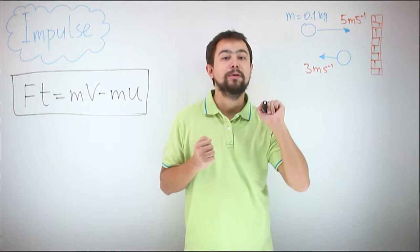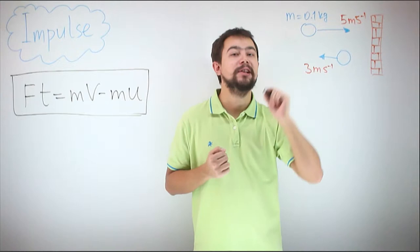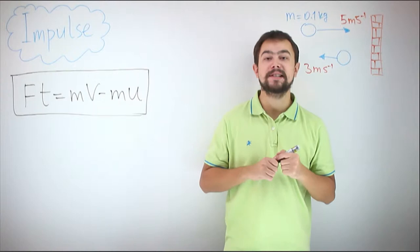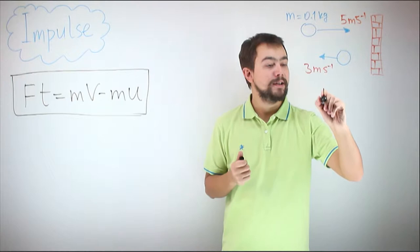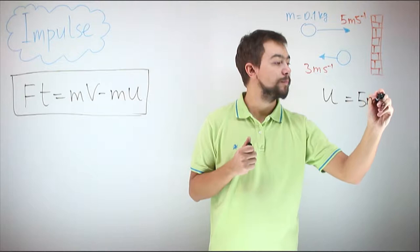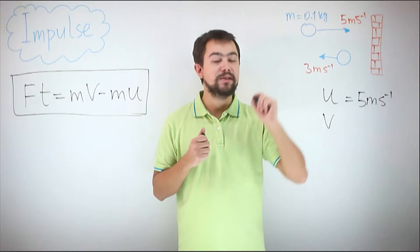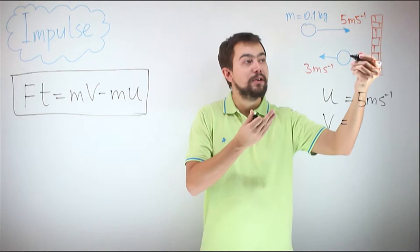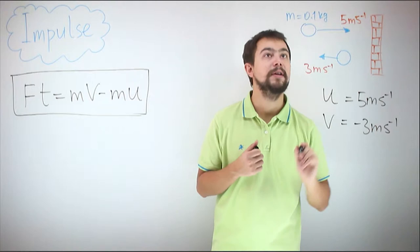A short example. A tennis ball travelling at 5 meters per second bounces off a brick wall backwards with a velocity of 3 meters per second. Let's find the impulse delivered to this tennis ball by the brick wall. The initial velocity is 5 meters per second. The final velocity is 3 meters per second, but since it's a vector and the direction is backwards, it's minus 3 meters per second.